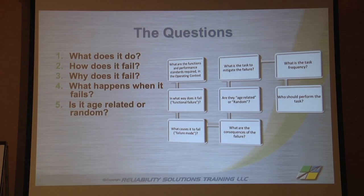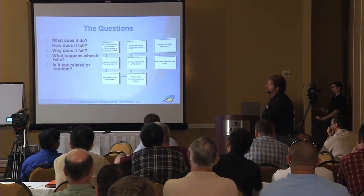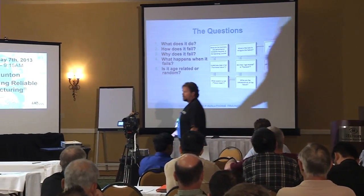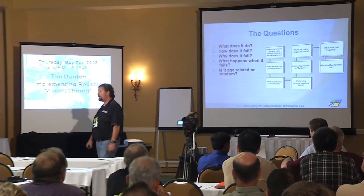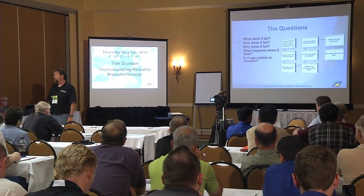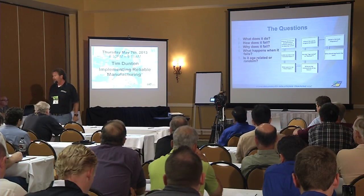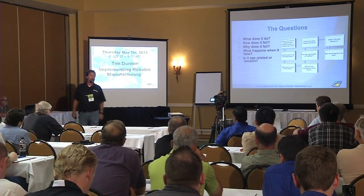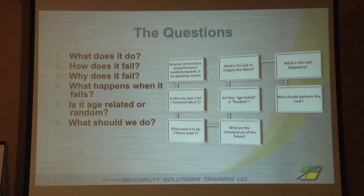The big thing we have to determine is whether the individual failure mode is age-related or random. If it's age-related, then some kind of time-based scheduled replacement, repair, or restoration is required. If it's random, then the only thing you can do is condition monitoring. And if it's random where the P-to-F curve is so short — like instantaneous, light-bulb-type short — then you're looking at a system redesign, or you run it to failure. So what do we have to do to manage the failure? What's the task — is it ultrasound, oil analysis, or vibration?